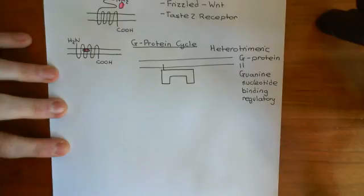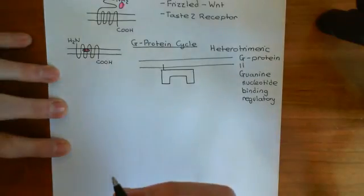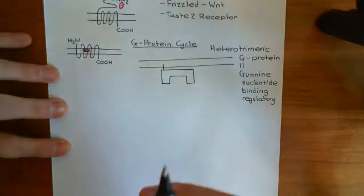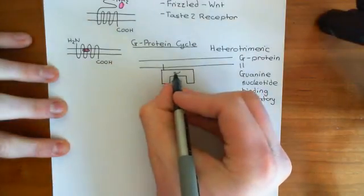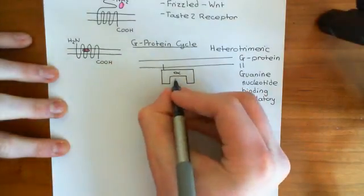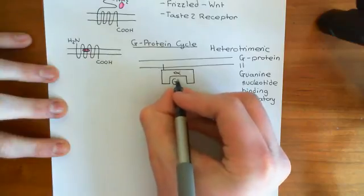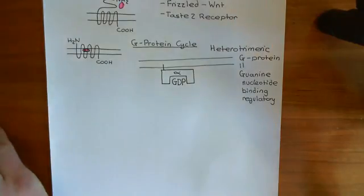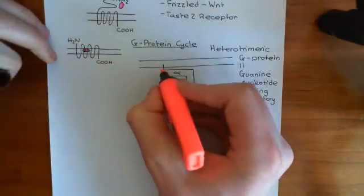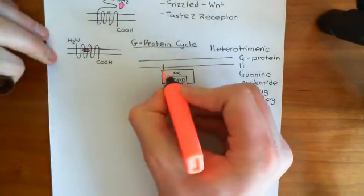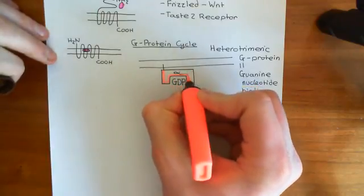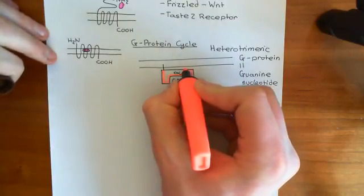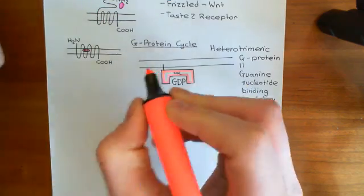They have an on state, in which they have guanine triphosphate, GTP, bound to them. And then they have an off state, in which they have guanine diphosphate, GDP, bound to them. So let's say that our alpha subunit is going to start off in the off state, and therefore we'll have guanine diphosphate bound to it. So here's my alpha subunit, currently in the off state with GDP bound to it.